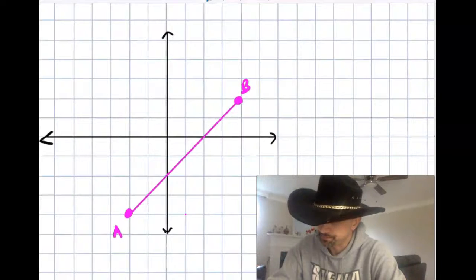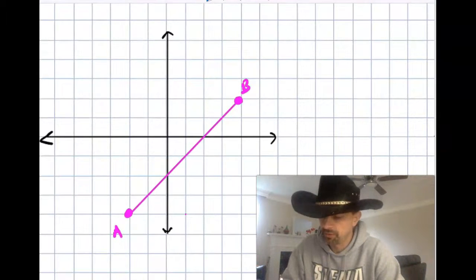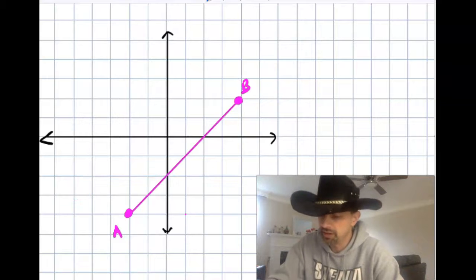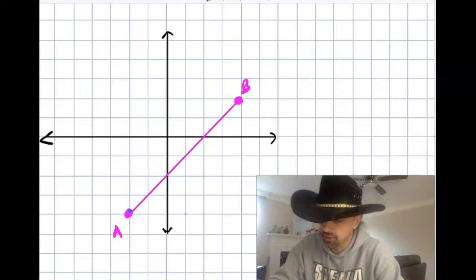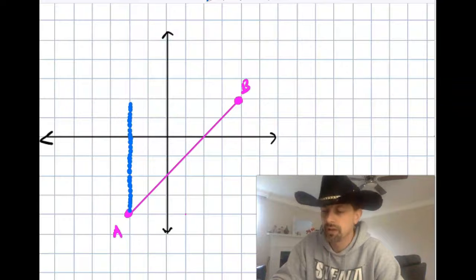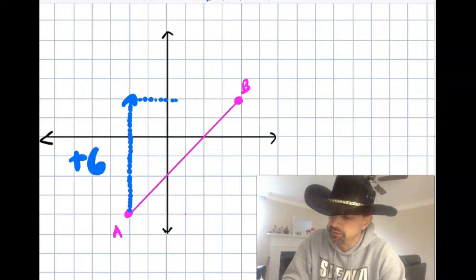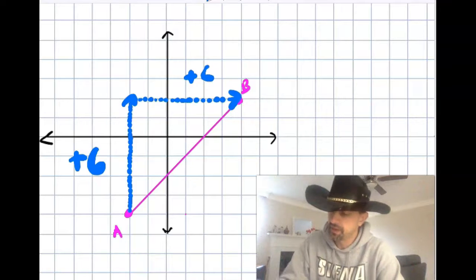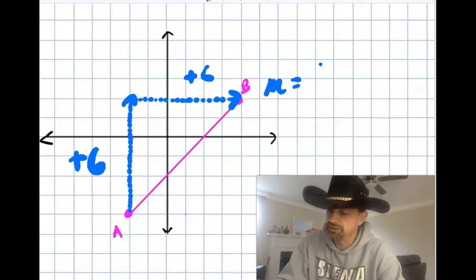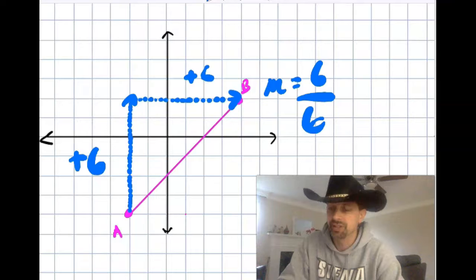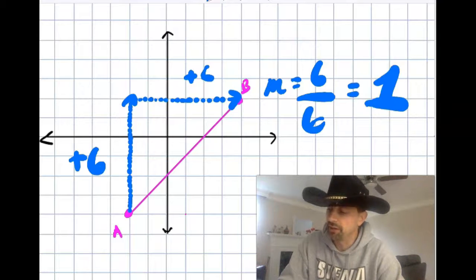This one here. In order to get from this area to that area, I have to go up first. So up 1, 2, 3, 4, 5, 6. And then over 1, 2, 3, 4, 5, 6. So the slope there was positive 6 over 6. And we just call that a big fat 1.